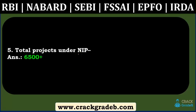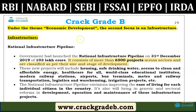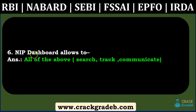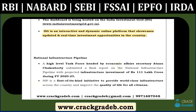Total projects under the National Infrastructure Pipeline Dashboard: it was mentioned in the budget document that 6,500+ projects — currently 6,700 or 6,800 projects are on the dashboard. The NIP dashboard allows 'all of the above' — to search, track, and communicate about infrastructure projects. We have covered every detail about the National Infrastructure Pipeline project and the dashboard.